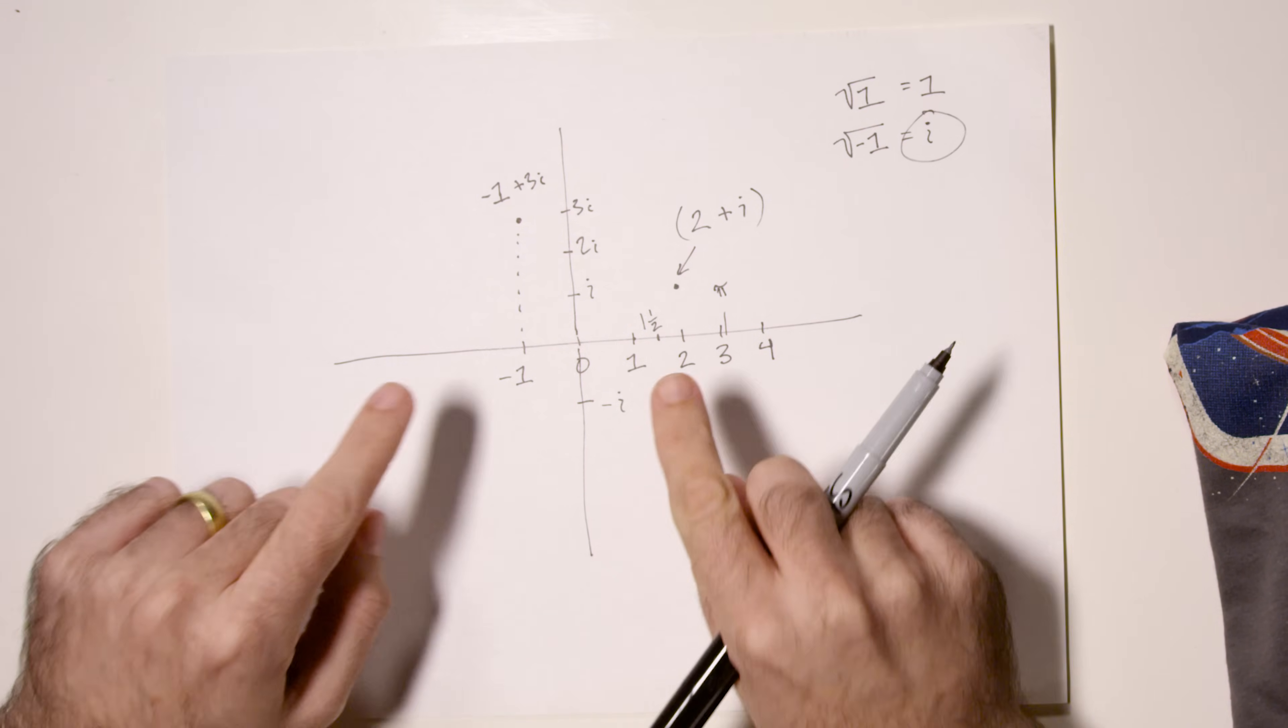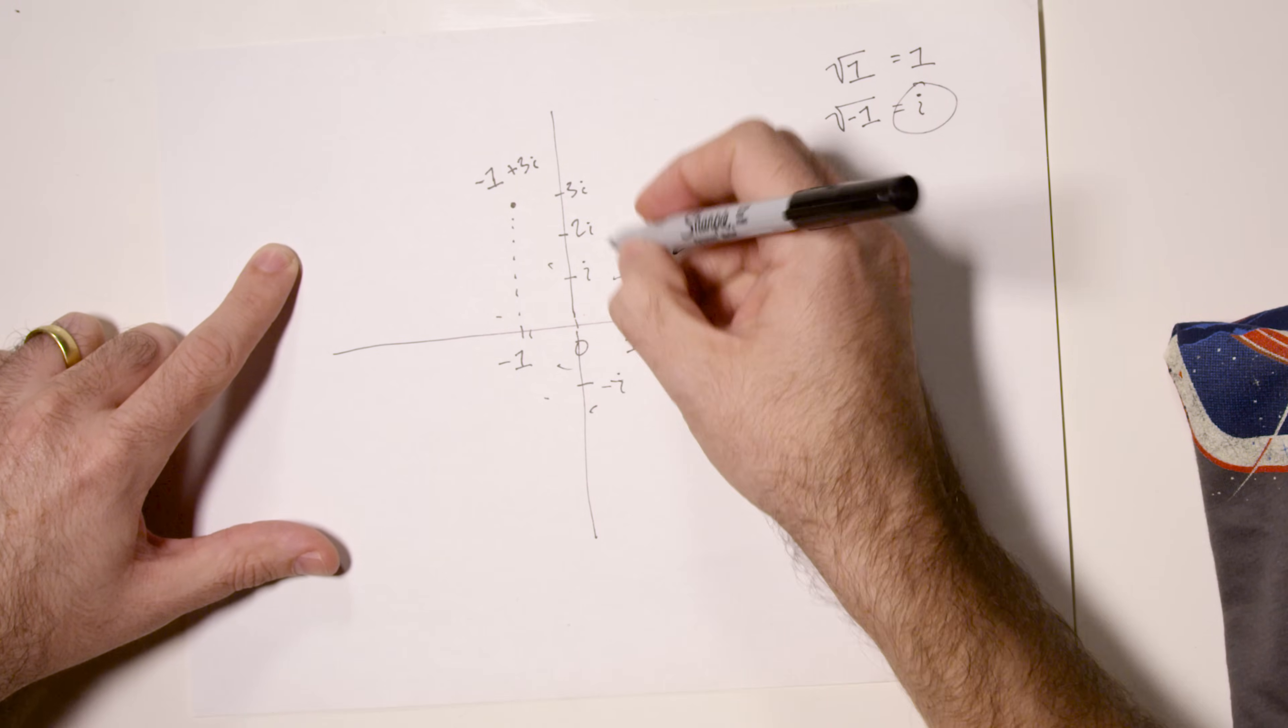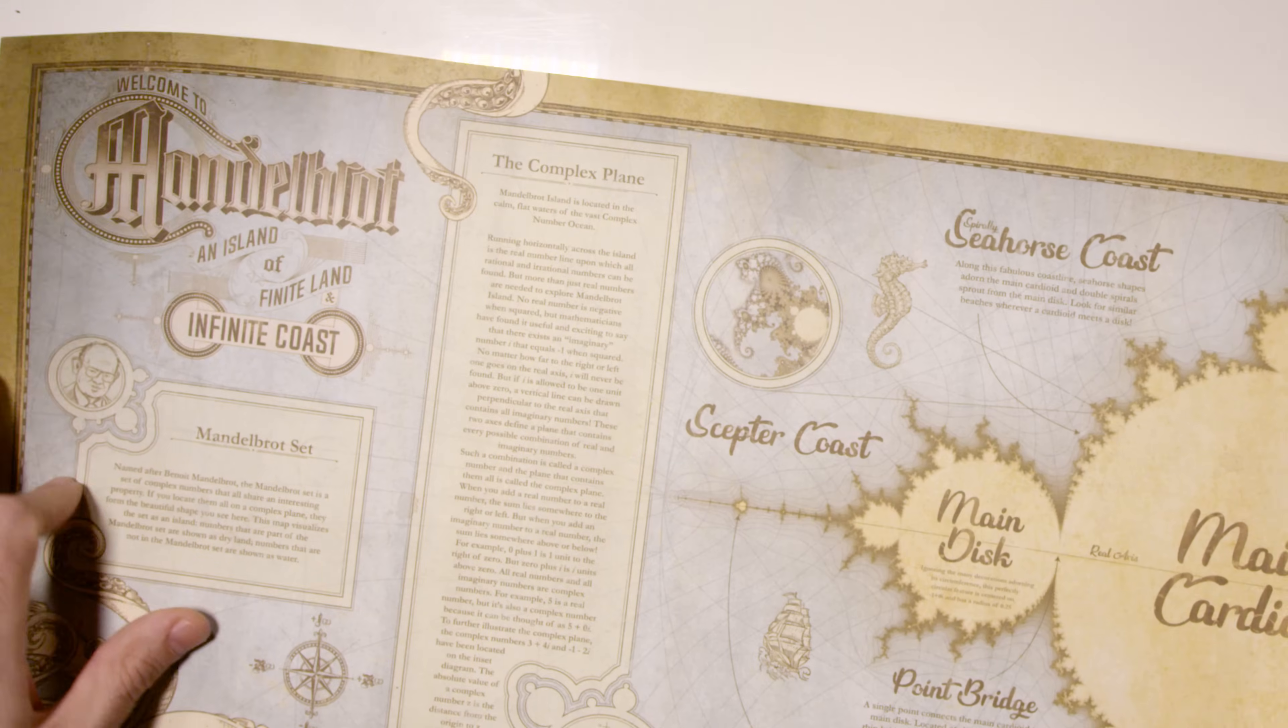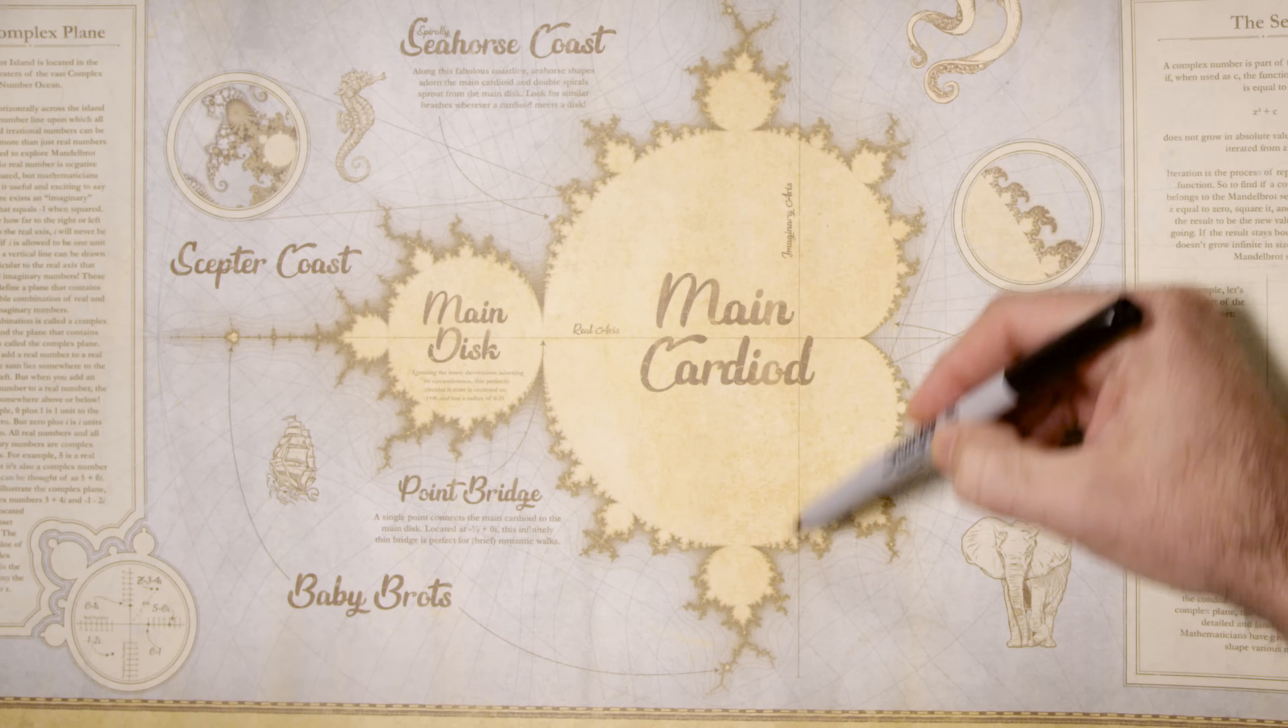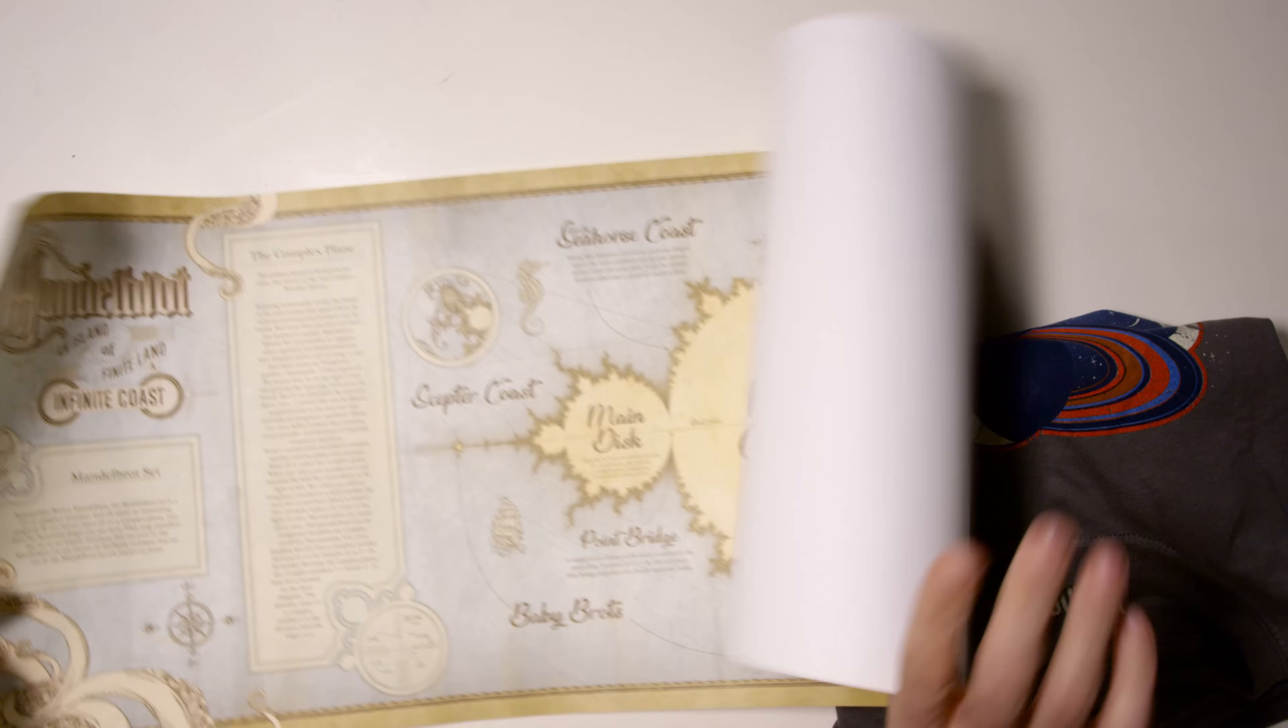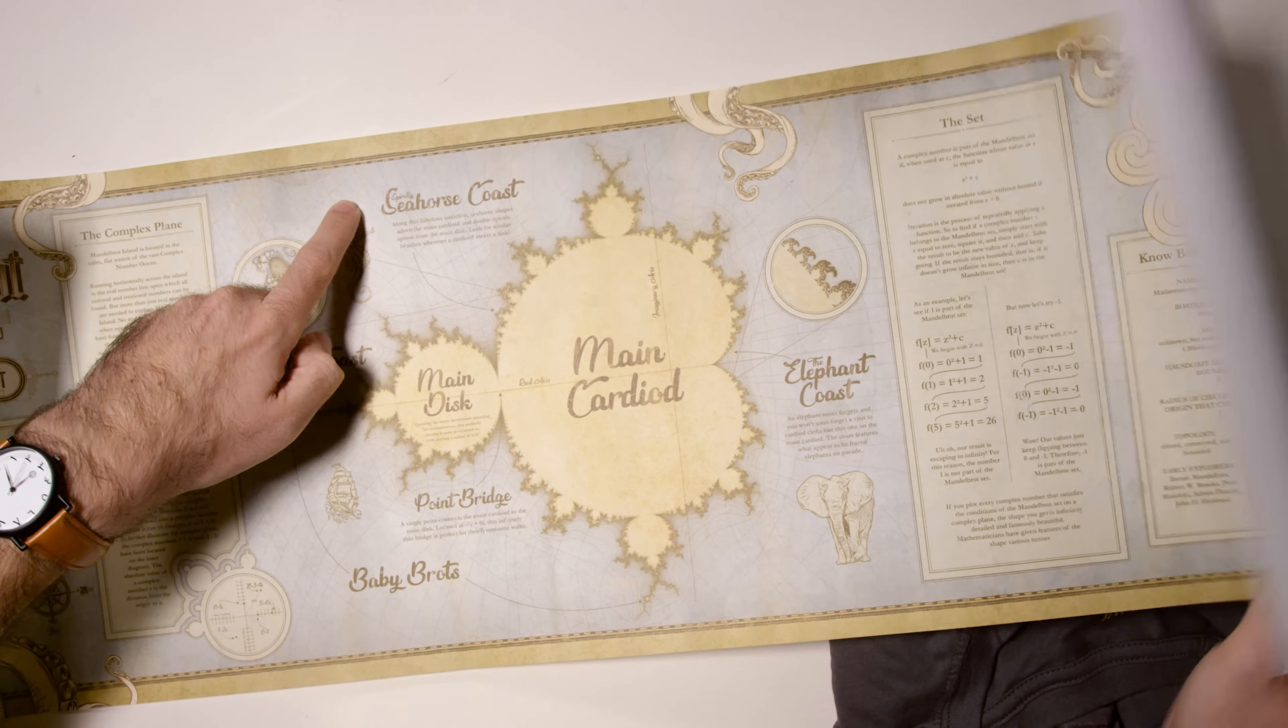And it is these numbers that either belong or don't belong in the Mandelbrot set. By picking all the numbers that belong and plotting them on a complex plane, what we wind up with is a beautiful shape known as the Mandelbrot set, visualized like this. If you look on our poster, this right here is the imaginary axis and this is the real axis. How do you know if a number, a complex number, belongs to the Mandelbrot set or not? Whether it is a piece of land on this island or if it's like out here in the ocean, not part of the set. I could spend a bunch of time talking about Julia sets and we could start more generally, but I want to go right to Mandelbrot.